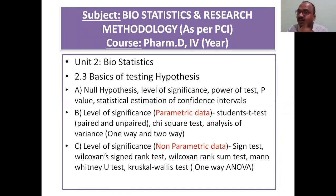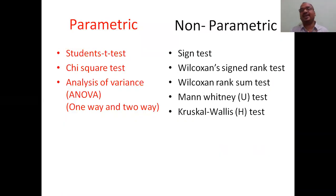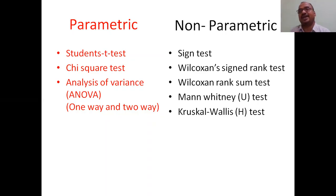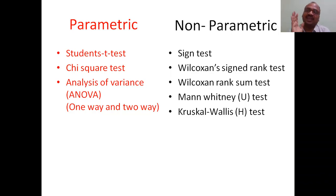The remaining tests I have explained in separate videos. Parametric tests include the Student's t-test. In competitive exams they will ask you which test comes under parametric and which test comes under non-parametric in objective type questions. Parametric tests include Student's t-test, chi-square test, and ANOVA (analysis of variance).